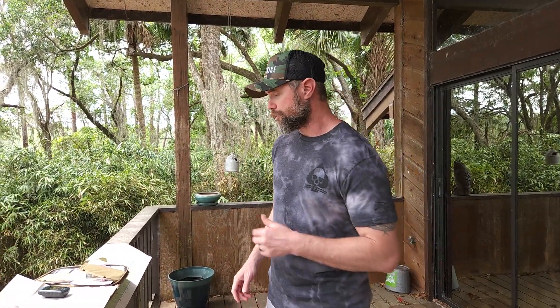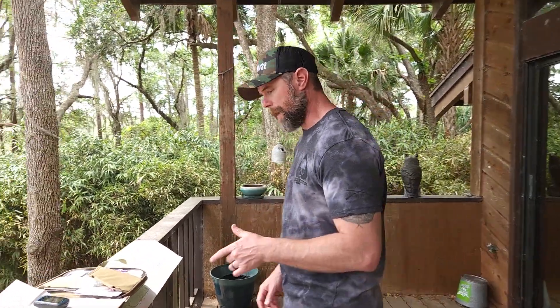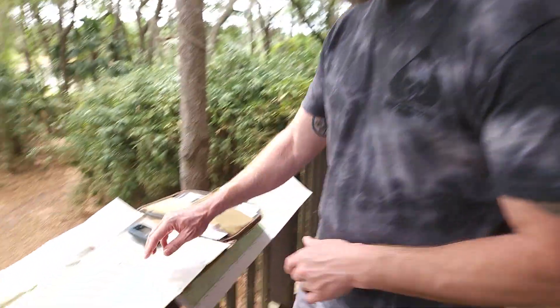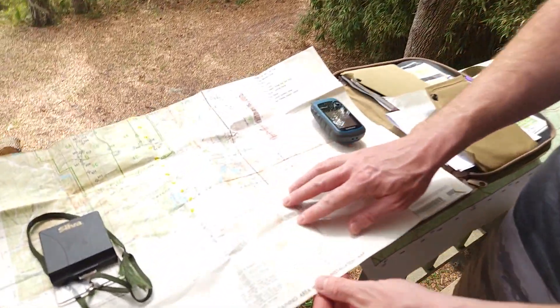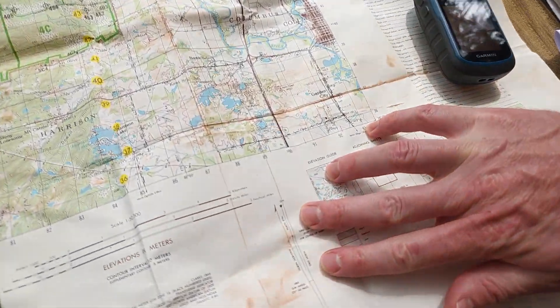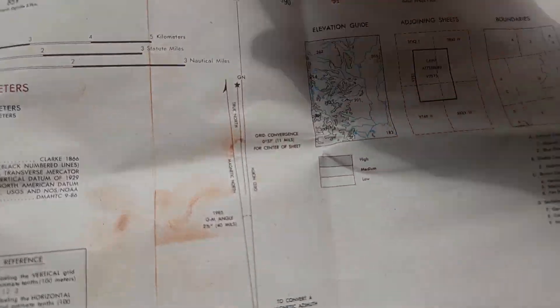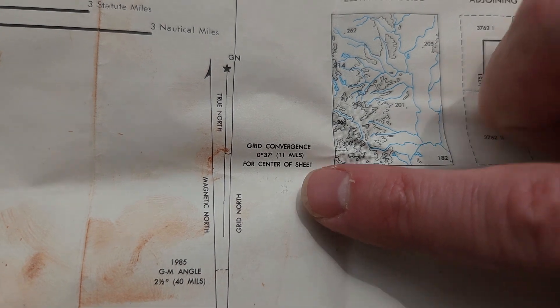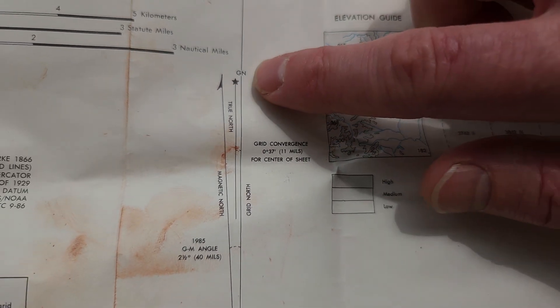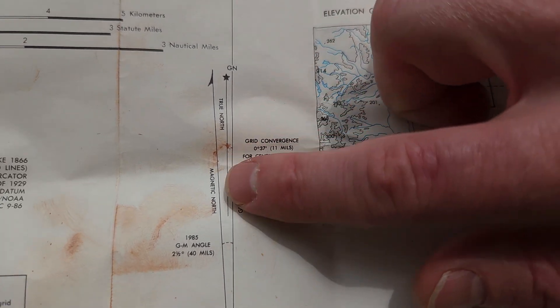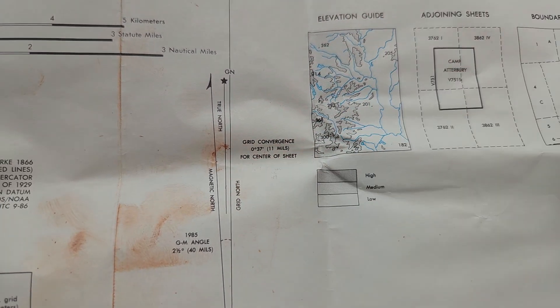There are three of them: True North, Magnetic North, and Grid North. Come take a look at this map real quick. If you look here on the legend, you have True North, Grid North, and Magnetic North.